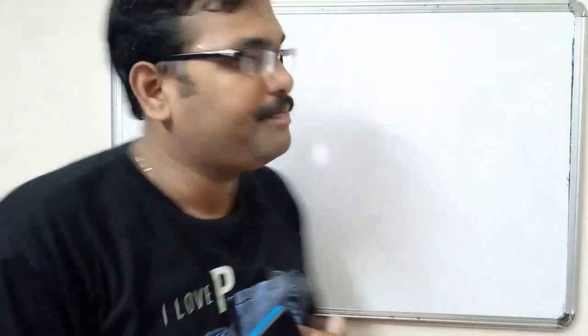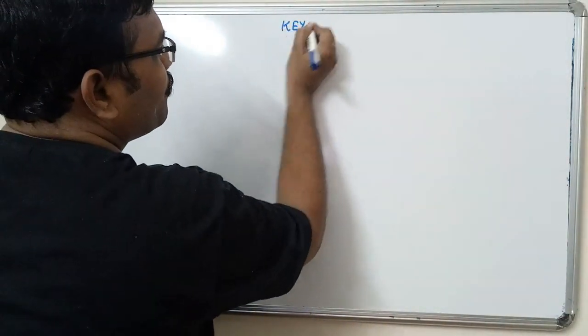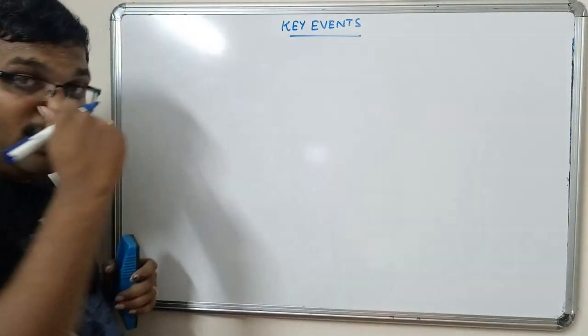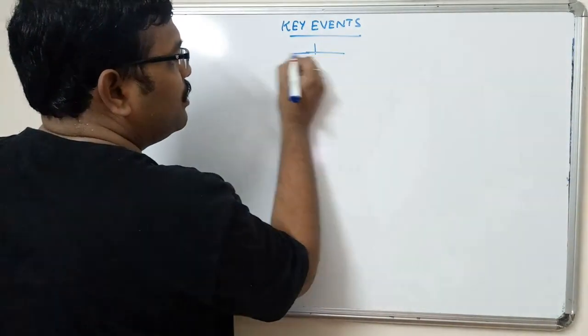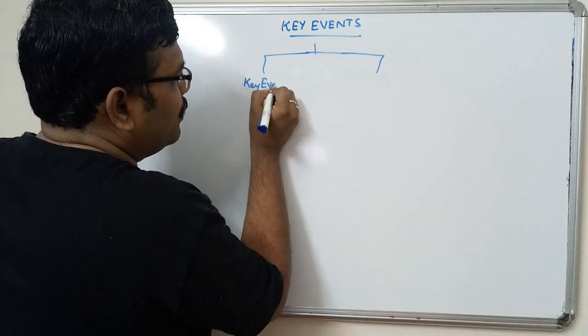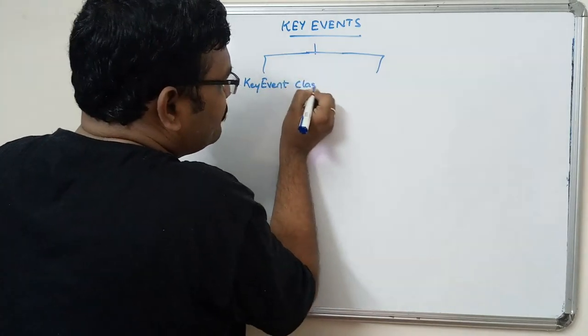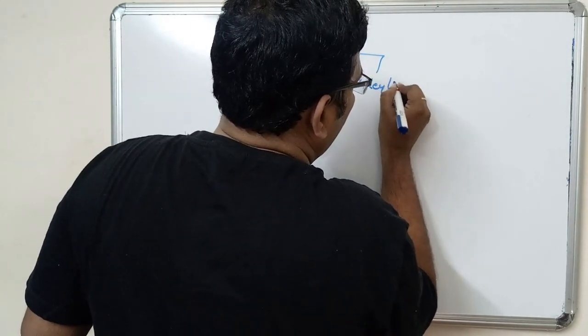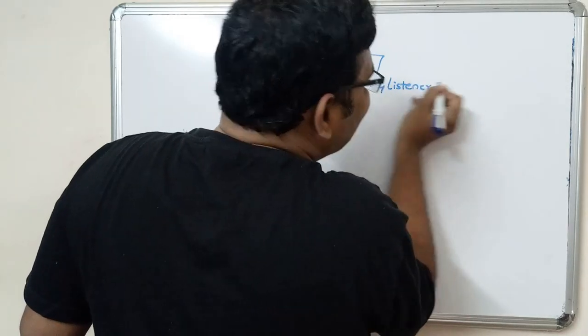Hello friends, welcome back to our session. In the previous session we have seen a program which handles mouse events, and in this session we will see another program which handles key events. To implement key events, two things should be added: one is the KeyEvent class, and another one is the KeyListener interface.